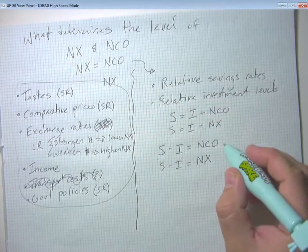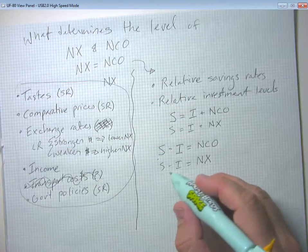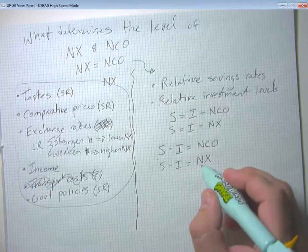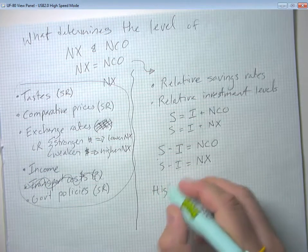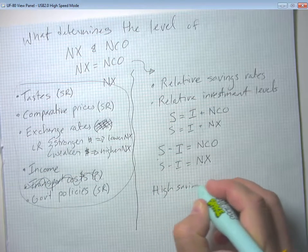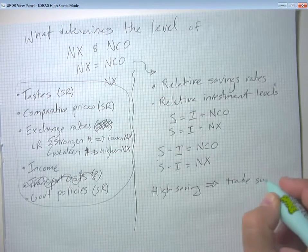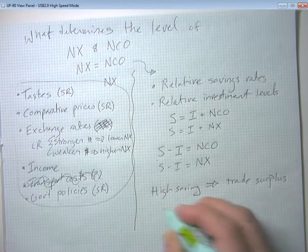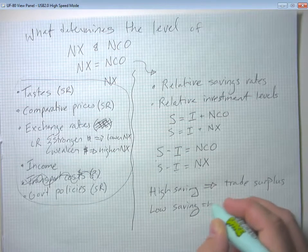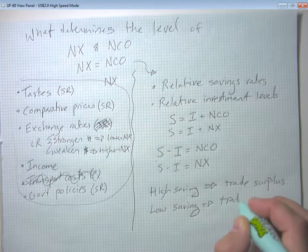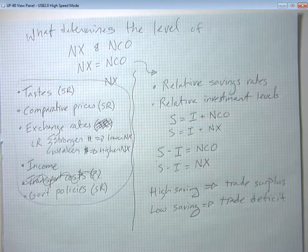So when a country has a high level of saving relative to its level of investment, then it's going to have positive net capital outflows. Or if it has a high level of saving relative to its level of investment, it's going to have positive net exports. So high saving means trade surplus. Low saving, and this is all relative to the level of investment, is going to mean a trade deficit.